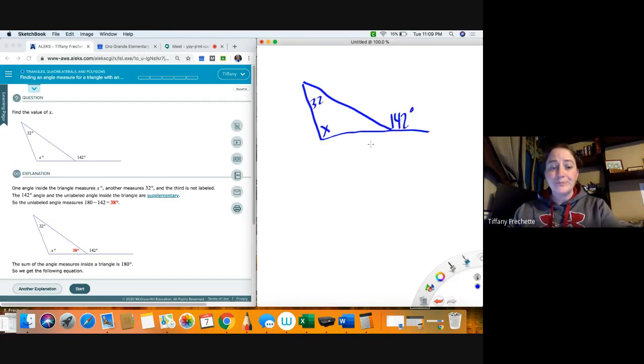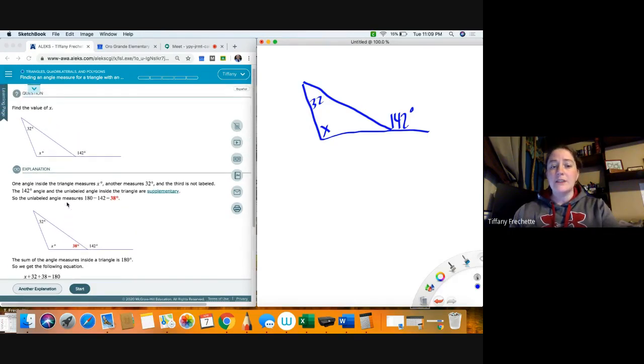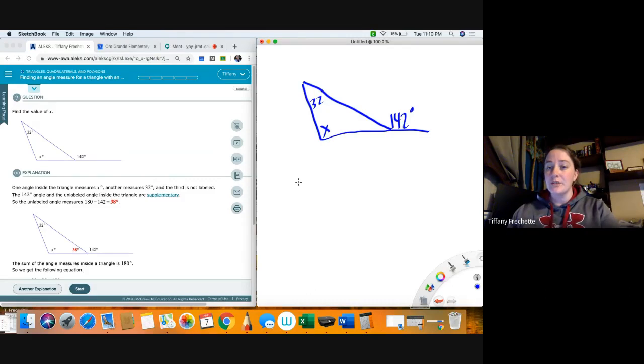Alright, so they immediately start showing you some images over here. There's actually two different methods for this one that I want to show you. First, we've done this a couple of times this week - all angles in a triangle have to add up to 180 degrees, always. So if I knew all three of these, they'd have to add up to 180 degrees.